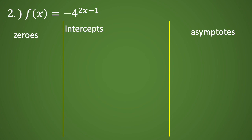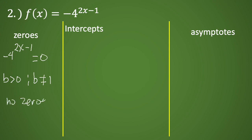For question number two, we have negative four raised to 2x minus one equals zero. Going back to the rules for the exponential function, b should be greater than zero and b should not be equal to one. Negative four is not greater than zero, so the equation didn't meet the requirements to simplify further. Therefore, we have no zero and no x-intercept.